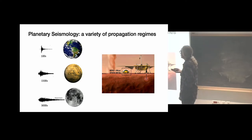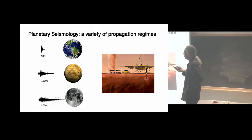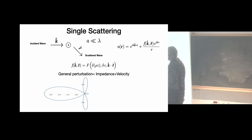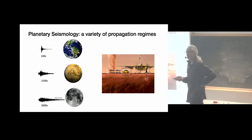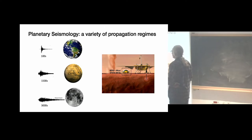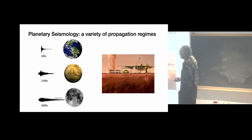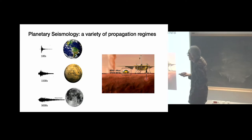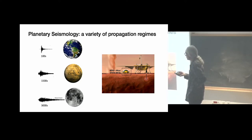One thing I like about planetary seismology is the super large variety of propagation regimes. On Earth you have beautiful ballistic waves used for seismic tomography producing 3D images. On the opposite side, the Moon has super long-lived codas and diffuse signals — totally different propagation regimes. Mars is probably intermediate: some ballistic waves, not so many, and a lot of scattering.